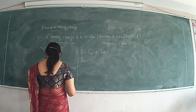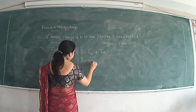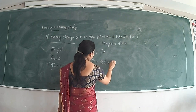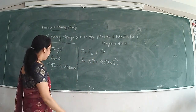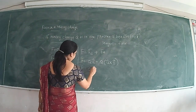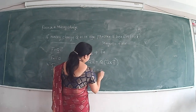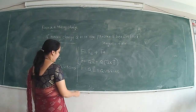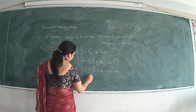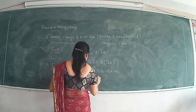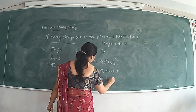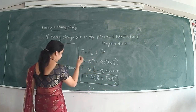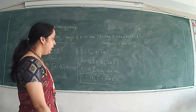F equals Q into E plus FM, where FM is Q(U × B). So F = Q(E + U × B). This is the Lorentz force equation.